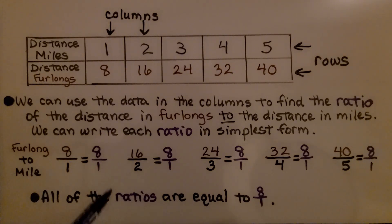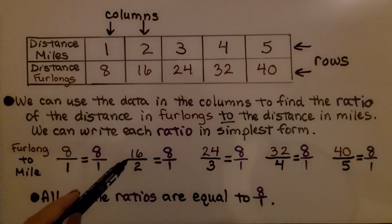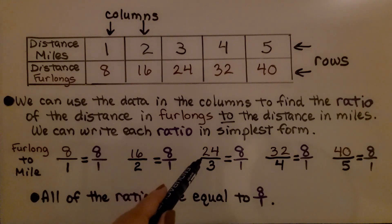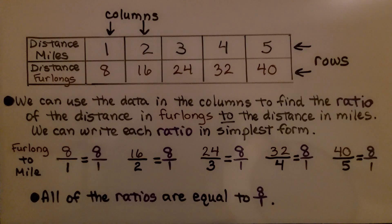And if we have 16 furlongs to 2 miles, its simplest form is 8 to 1. And 24 furlongs to 3 miles in simplest form is 8 to 1. They're all 8 to 1. All of the ratios are equal to 8 to 1.